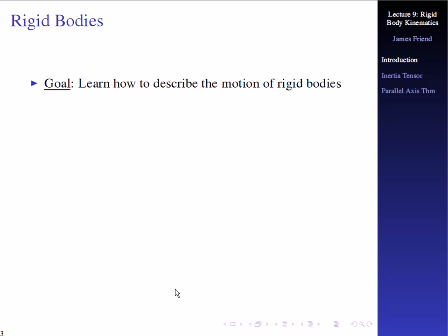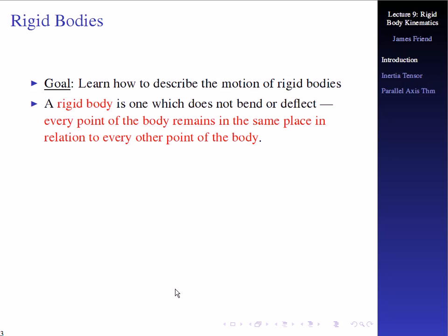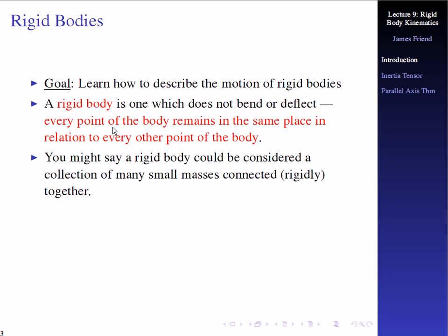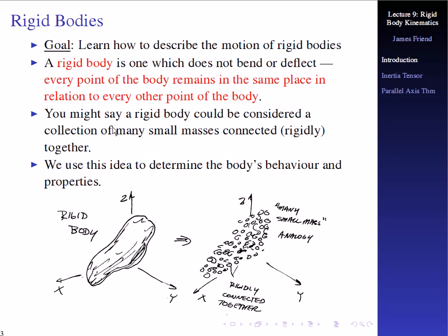A rigid body is one that does not bend or deflect. Every point of the body remains in the same place in relation to every other point of the body. We can use that to simplify the representation of rigid bodies in equations significantly. A rigid body can be considered a collection of many small masses connected rigidly together, like a potato shape with an X, Y, Z coordinate system.